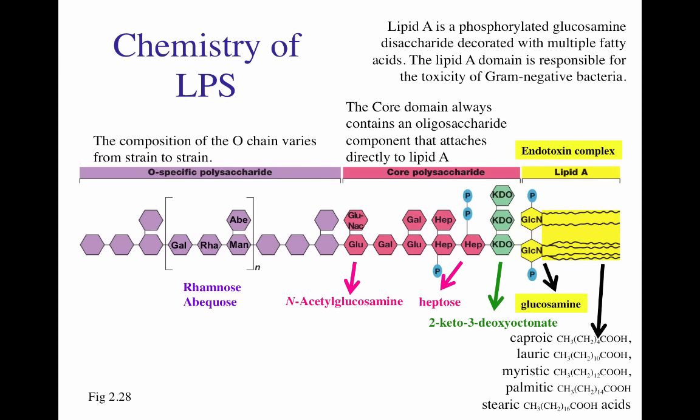To one of the glucosamine disaccharides, you have attachment of the core polysaccharide. The core polysaccharide is a domain present in all LPS molecules and is the same across all LPS molecules from different gram-negative microorganisms. It has three 2-keto-3-deoxy-octonate molecules attached to one another, and is also composed of heptoses, galactose, glucose, and N-acetylglucosamine molecules. The core domain always contains an oligosaccharide component directly attached to the lipid A component.